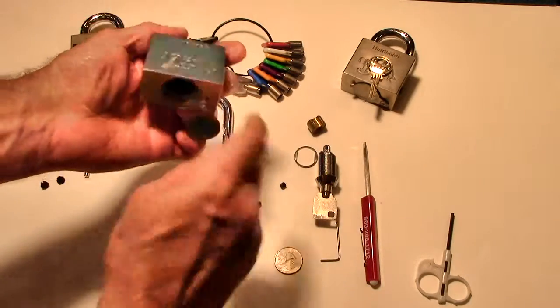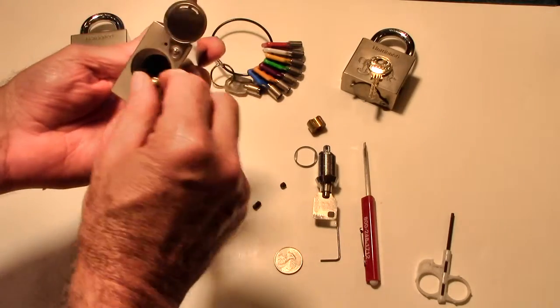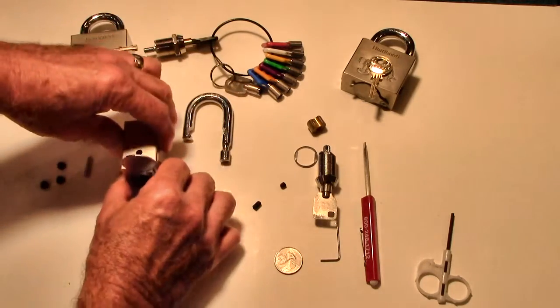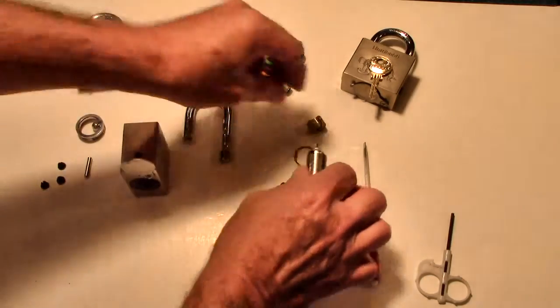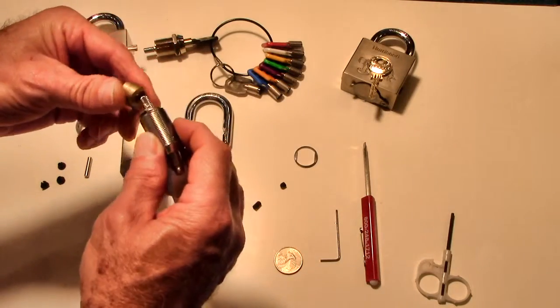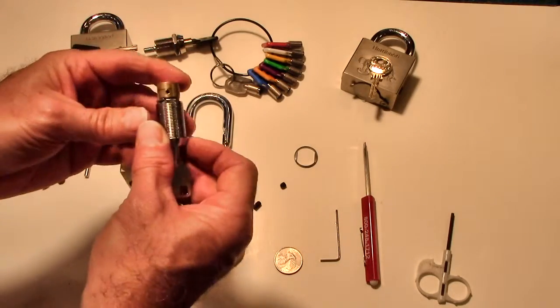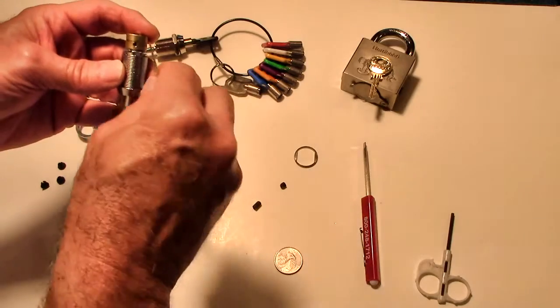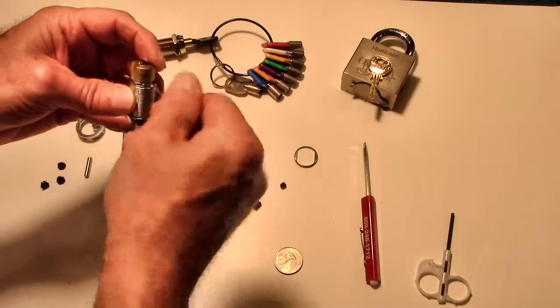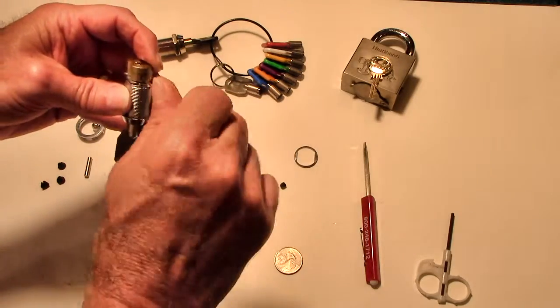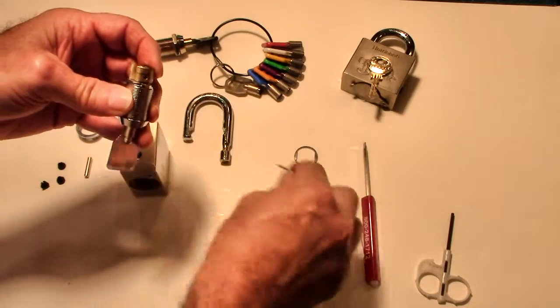To assemble, take the left side of the padlock as it's pointing towards you, put the first hardened steel ball in, then we take the lock cylinder, insert our locking cam onto it using the smaller of the two Allen wrenches, tighten it down securely.